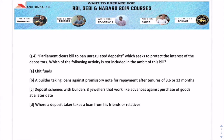The current affairs MCQ is: Parliament clears the bill to ban unregulated deposits, which seeks to protect the interest of depositors. Which of the following activity is NOT included in the ambit of this bill? A) Chit funds, B) A builder taking loans against promissory note for repayment after tenures of 3 to 6 or 12 months, C) Deposit schemes with builders and dwellers that work like advances against the purchase of goods at a later date, D) Where a deposit taker takes a loan from his friends or relatives.